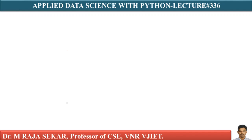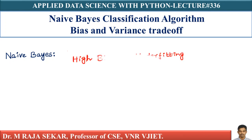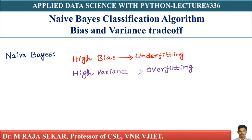Welcome to Raj Shaker Classes on Applied Data Science with Python. This is lecture number 336. In this lecture, we will try to understand the bias-variance trade-off for Naive Bayes. The bias-variance trade-off is as follows: high bias basically means underfitting, and high variance basically means overfitting. This is the crux of the whole idea of bias and variance trade-off.